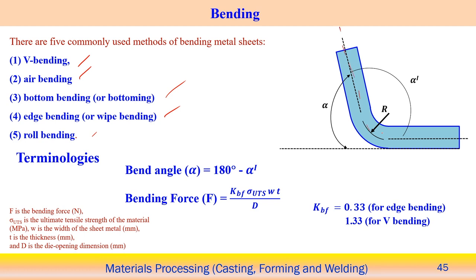With respect to the neutral axis, we define the radius of curvature of the bend and the bend angle alpha. The complementary angle is 180 degrees minus alpha. We can also calculate the bending force. The bending force F equals KVF, where KVF is a factor. Depending upon the type of bending operation, if it is edge bending the factor is 0.33, and if it is V bending it is 1.33. The remaining parameters are the ultimate tensile strength, width, and thickness of the sheet metal, and D is the die opening dimension. The radius of curvature depends on the shape of the die.